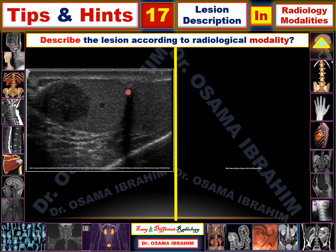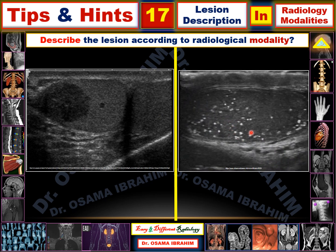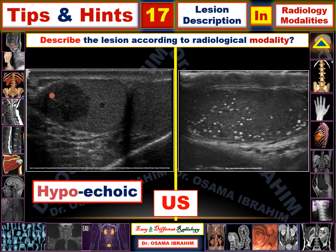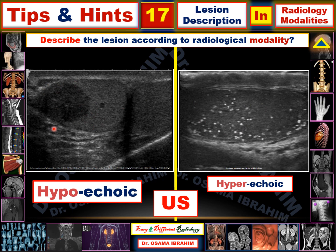We should always use the proper radiological term according to the imaging modality. Here the modality is ultrasound, so we describe lesions according to echogenicity. This lesion has low echogenicity and is described as hypoechoic. These multiple bright lesions are described as hyperechoic — for example, testicular microlithiasis versus a testicular tumor.